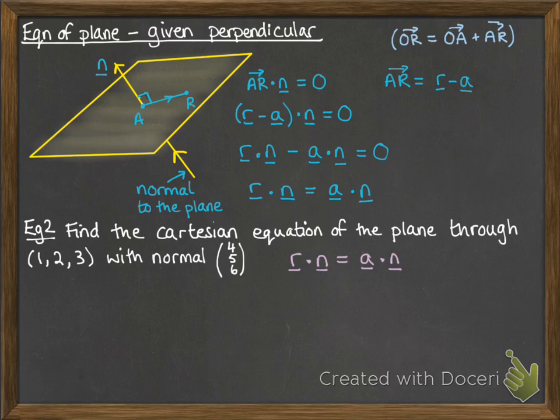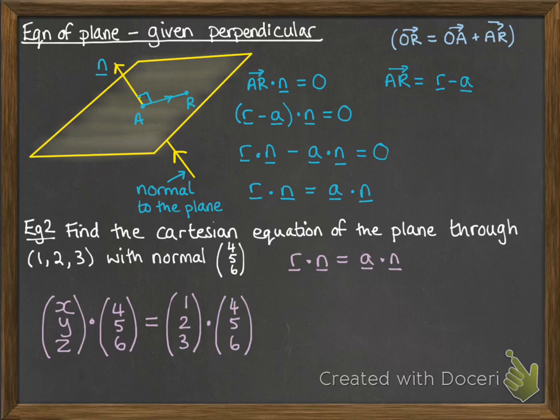So we're using the scalar product equal. So R is any point on that plane, so we call it X, Y, Z. Our normal was 4, 5, 6, so we're doing the scalar product of that. We know that it's equal to A, which is the point we were given, and the scalar product of that with the normal.